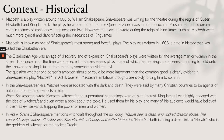In Act 2 Scene 1, Macbeth's ambitious thoughts are slowly forcing him to commit the crime. Witches were associated with the dark and death and were said by many Christian countries to be agents of Satan performing evil acts at night. When Shakespeare wrote Macbeth, witchcraft and supernatural happenings were of high interest — King James I was highly engaged with the idea of witchcraft and even wrote a book on the topic. Shakespeare used them for his play, and in Act 2 Scene 2, the soliloquy references witchcraft: 'witchcraft celebrates pale Hecate's offerings,' where Macbeth uses a direct link to Hecate, the goddess of witches for the ancient Greeks.